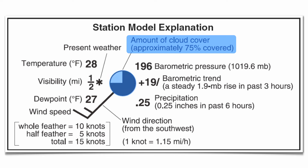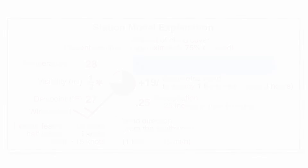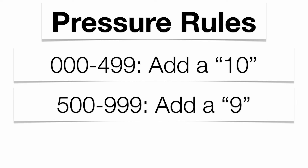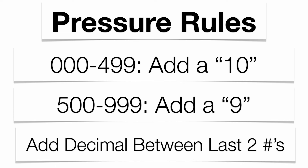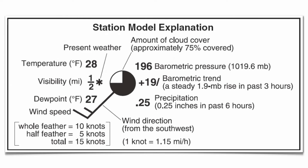Probably one of the more common questions about a station model is going to be barometric pressure. Your barometric pressure on the station model is always going to be a three-digit value, and there's a rule you need to follow to figure out the actual air pressure. If your pressure value is between 000 and 499, put a ten in front of it. If your number is between 500 and 999, put a nine in front. Then put a decimal between the last two numbers. In this example the value is 196 — between 000 and 499 — so you put a ten in front and a decimal between the nine and the six, giving you 1019.6 millibars.